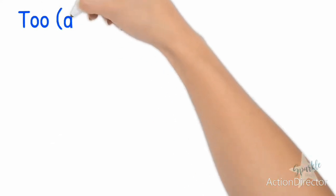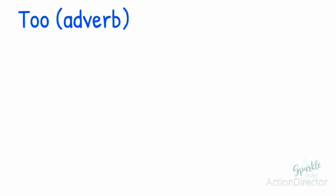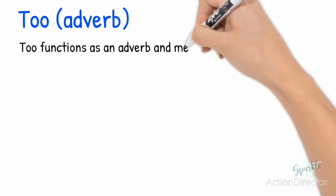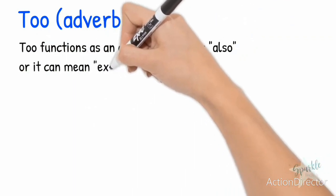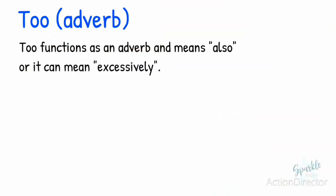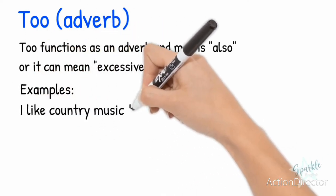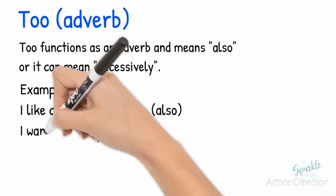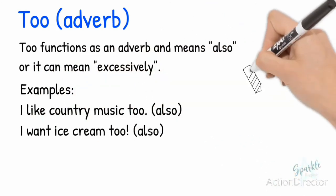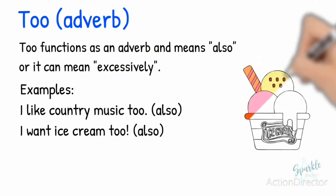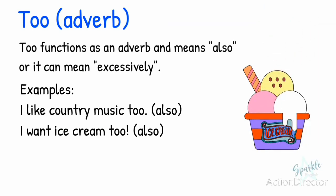Now let's look at too, spelled T-O-O. Too functions as an adverb and means also, or it can mean excessively or in excess. Let's look at some examples: I like country music too. I want ice cream too. These examples mean I also like country music or I also want ice cream.